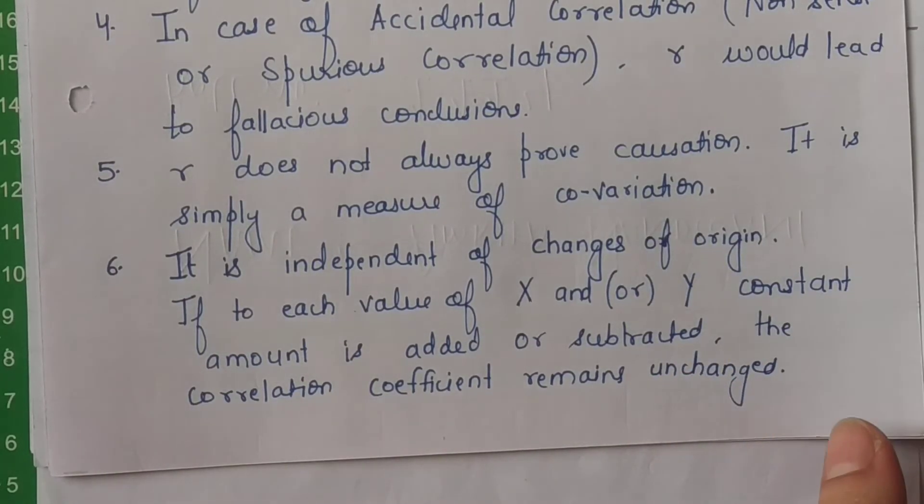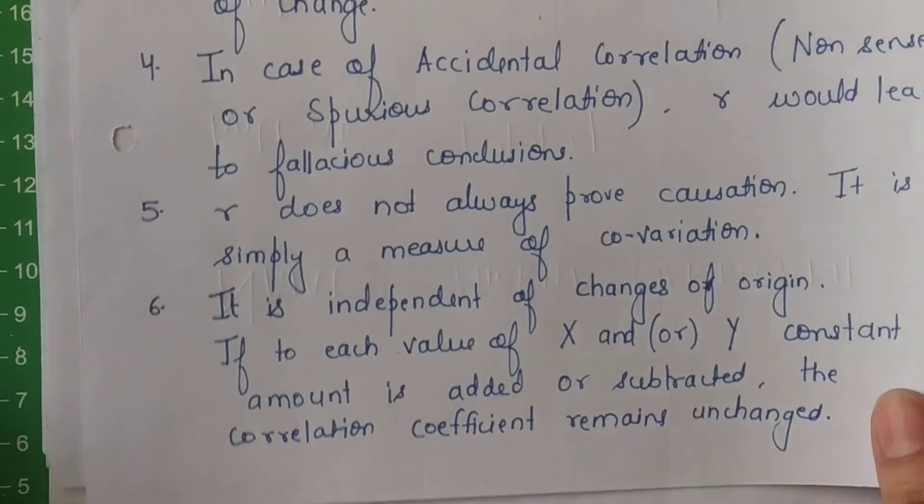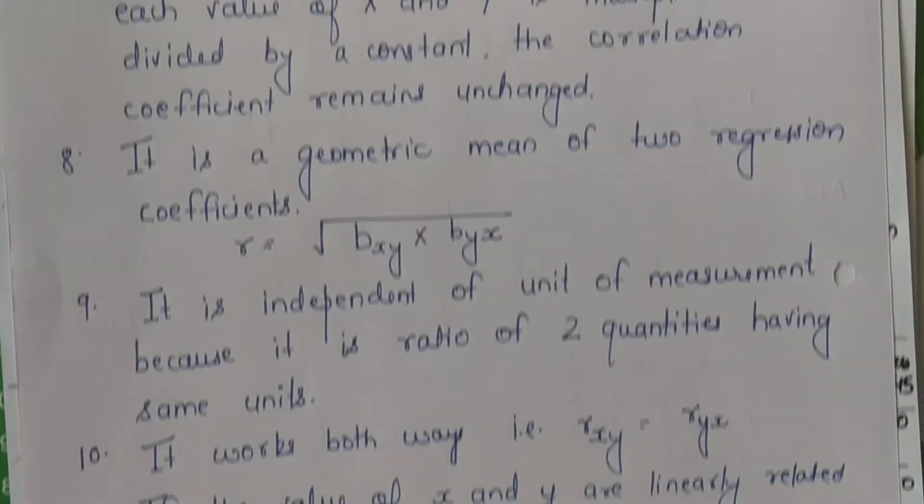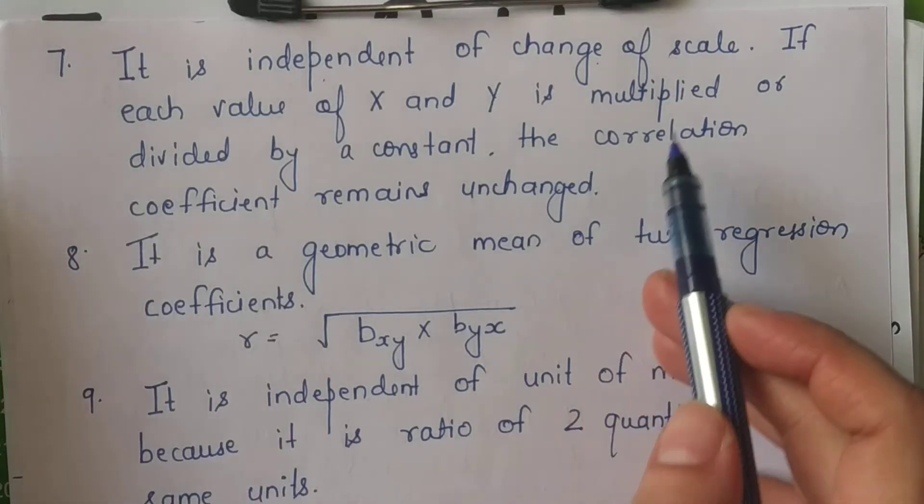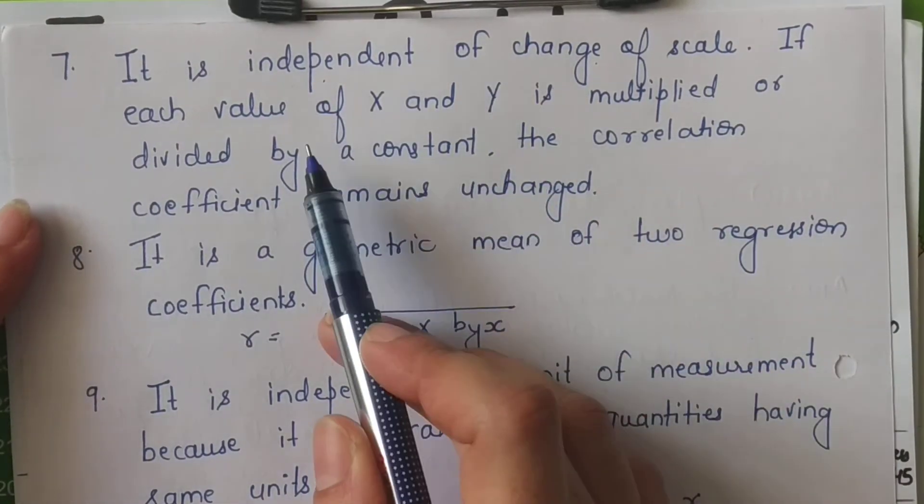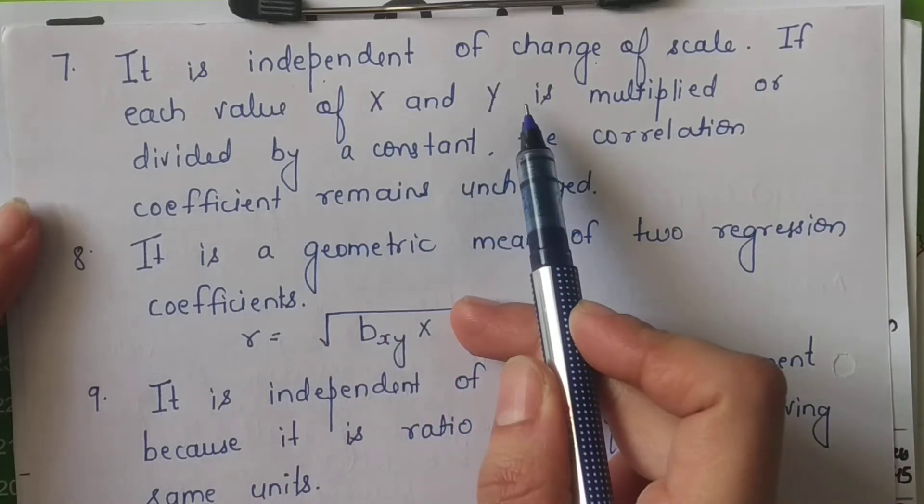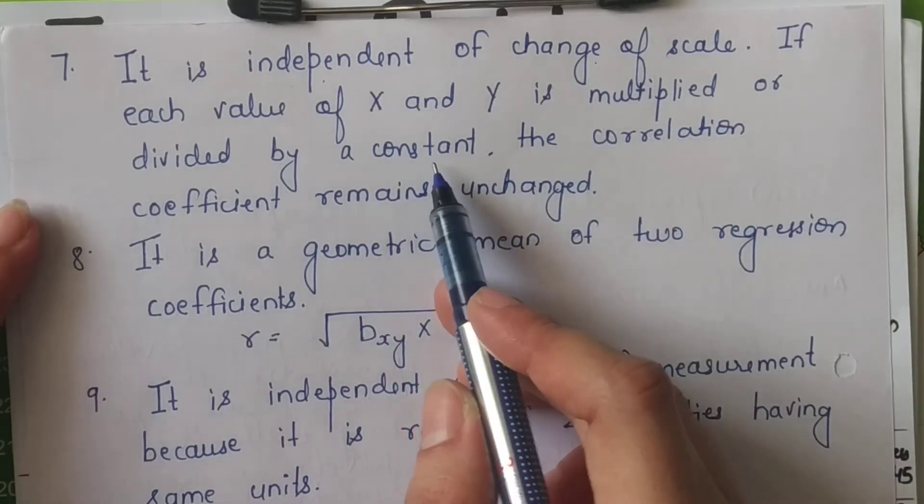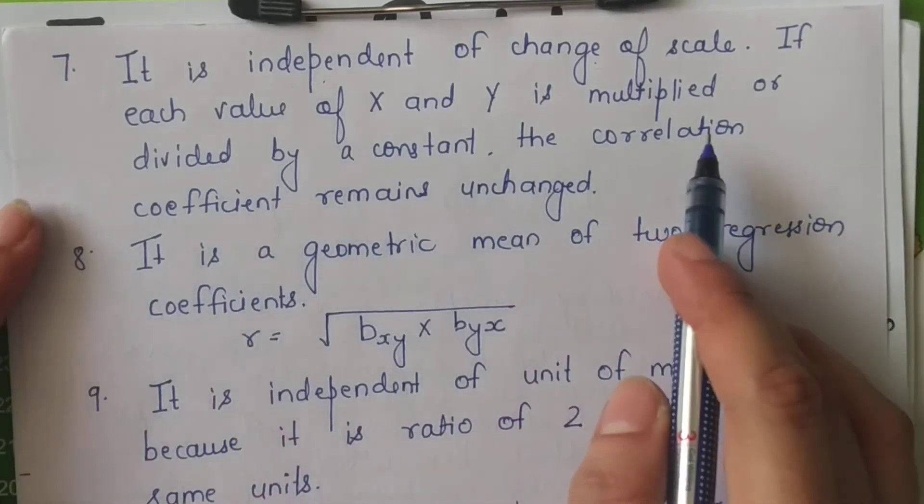Ab hum baat karte hain independent of changes of scale ki baare mein. It is independent of change of scale. Agar hum x or y, jo dono series hamare paas hain, inke sabhi value, sabhi items ke andar, hum koi constant figure multiply kar deti hain ya divide kar deti hain.